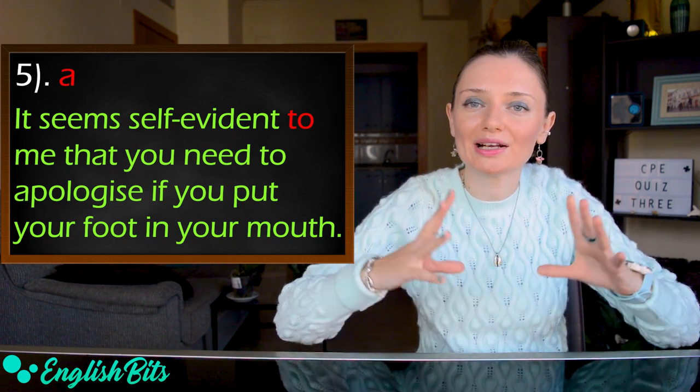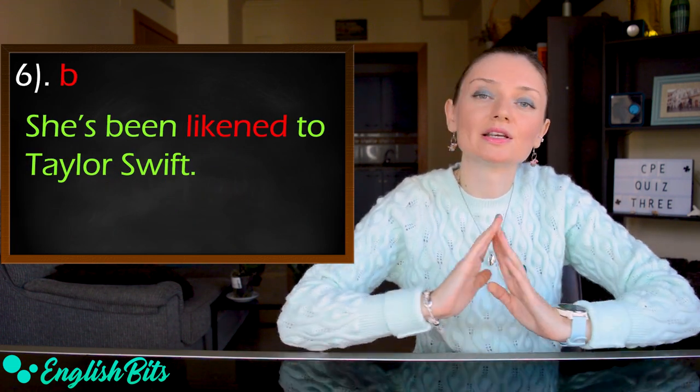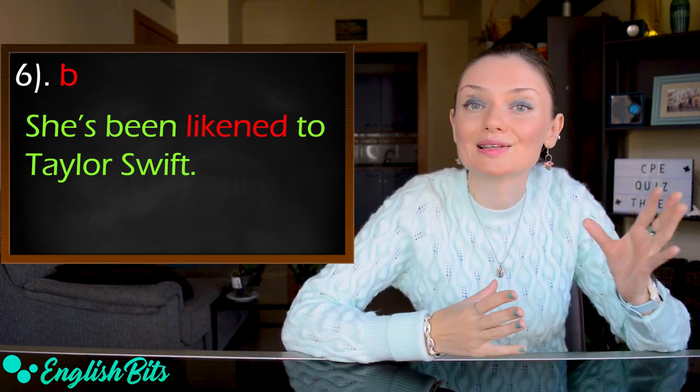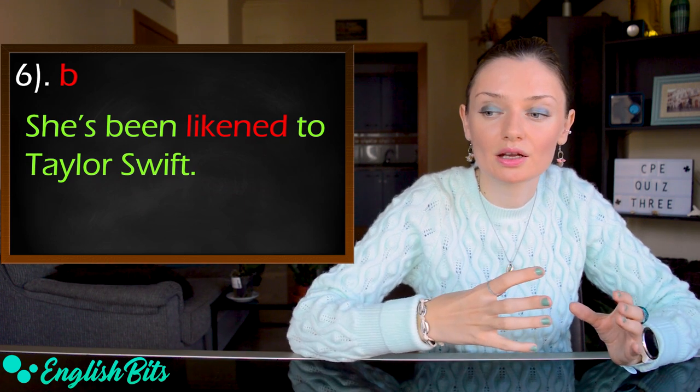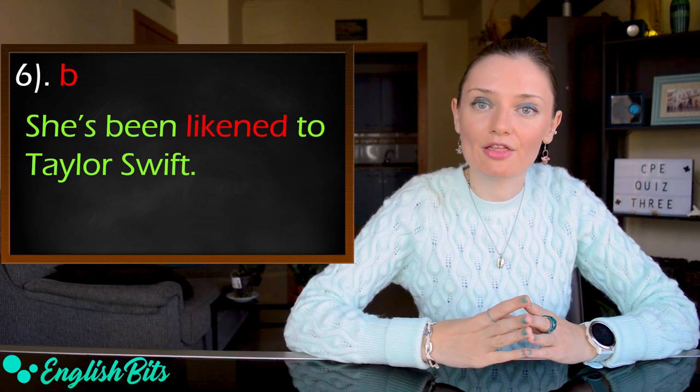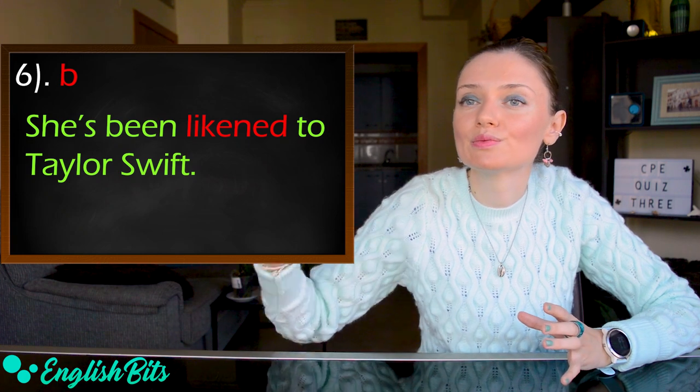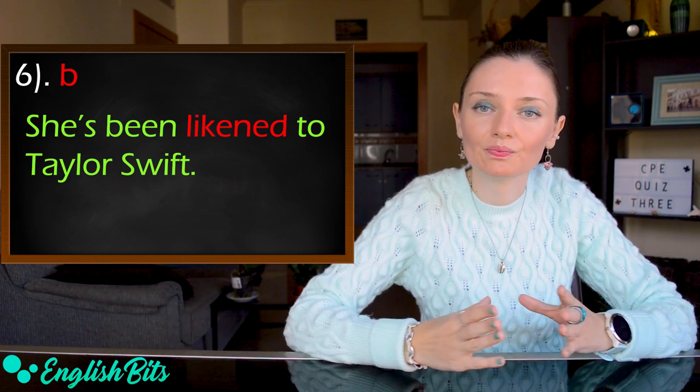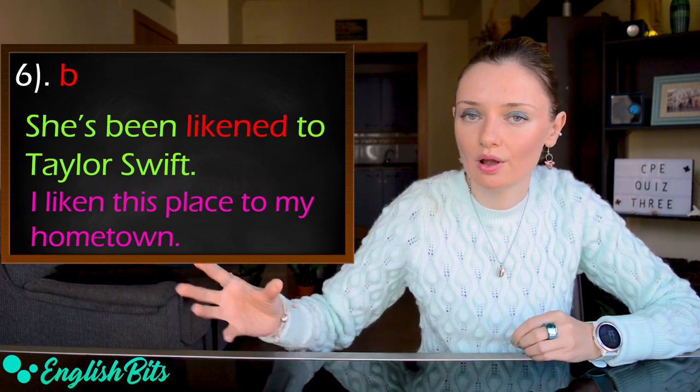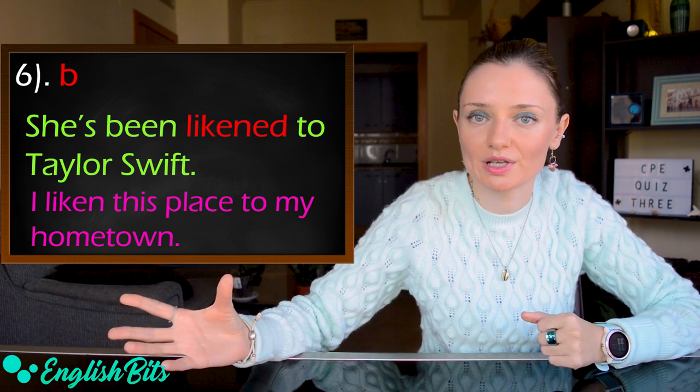Number six. The correct option is B. She's been likened to Taylor Swift. The verb to liken someone or something to someone or something means to say that someone is similar to someone else. Another example. I liken this place to my hometown, which means that this place is similar to my hometown.